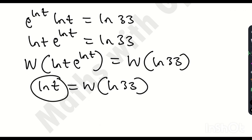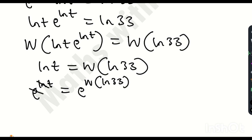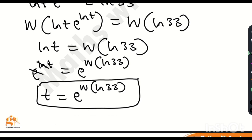Now it's easy to isolate t. Since ln and e are inverse functions, I apply e to both sides: e^(ln t) = e^(W(ln 33)). The left side simplifies to t. Therefore, t = e^(W(ln 33)). This is the value of t that satisfies the original equation t^t = 33.